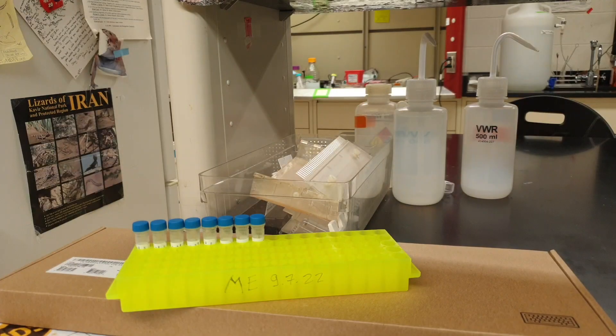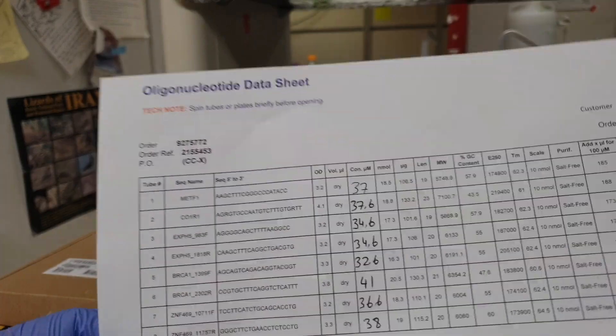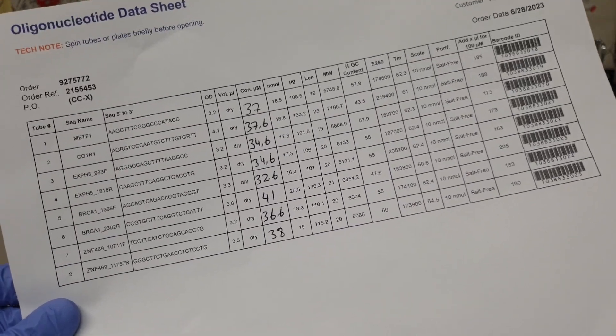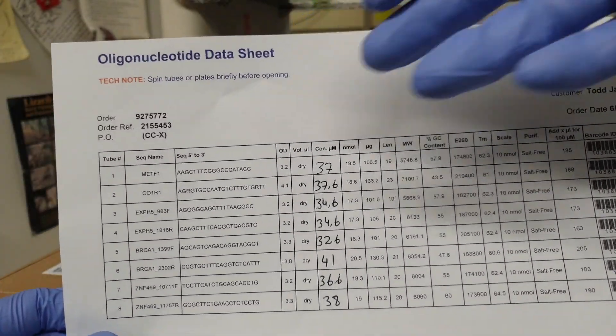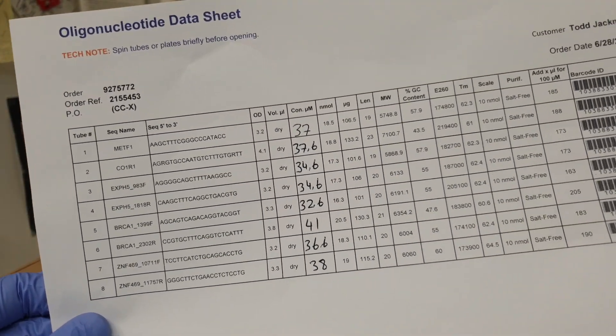Inside of this little folder there's gonna be another page and you're gonna take that out. You have the details of every primer, so for example we have the matte f1 and co1r1 which are for nd2 sequencing.